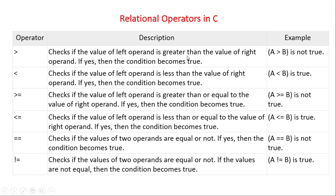Greater than checks if the value of the left operand is greater than the value of the right operand. If the condition is true — meaning the left operand is greater than the right operand — then the condition becomes true; otherwise it is false.